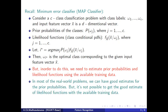In most real-world problems, we can get good estimates for the prior probabilities, but it's not possible to get good estimates for the likelihood functions with available training data. Because our training data is limited, we may require a huge amount of training data in order to estimate those joint distributions.